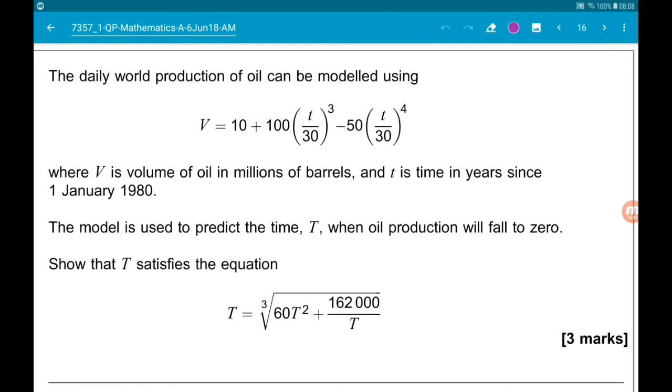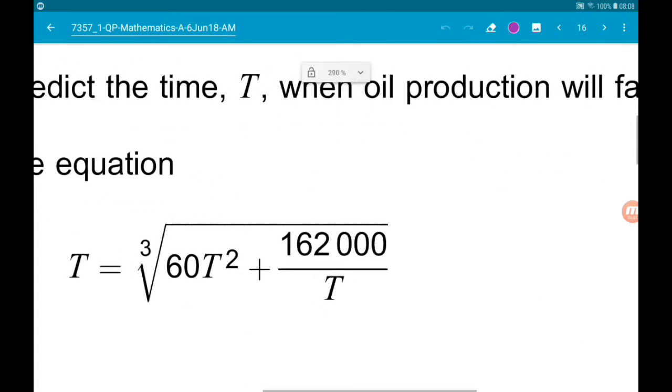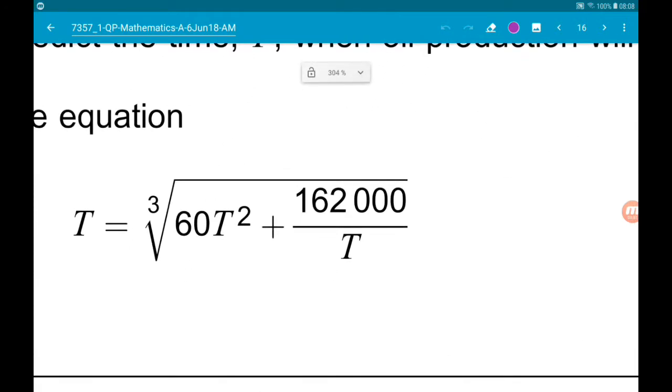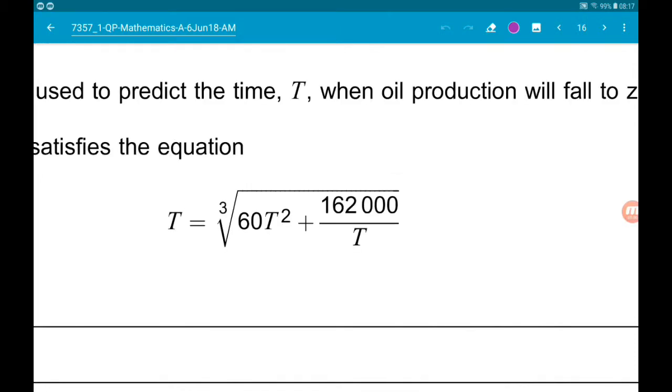The model is used to predict the time T when oil production will fall to zero. We want to show that T satisfies the equation T equals the cube root of 60T squared plus 162,000 over T. Okay, well, what do we know then?